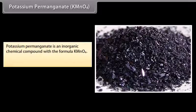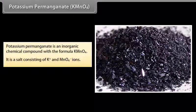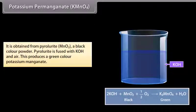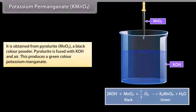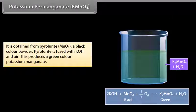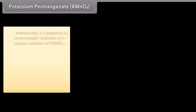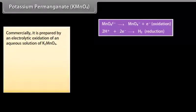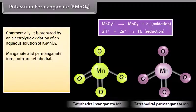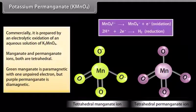Potassium permanganate is an inorganic chemical compound with the formula KMnO₄. It is a salt consisting of K⁺ and MnO₄⁻ ions. It is obtained from pyrolusite, a black color powder. Pyrolusite is fused with KOH and air to produce green-colored potassium manganate. Commercially, it is prepared by electrolytic oxidation of an aqueous solution of K₂MnO₄. Manganate and permanganate ions are both tetrahedral. Green manganate is paramagnetic with one unpaired electron, but purple permanganate is diamagnetic.